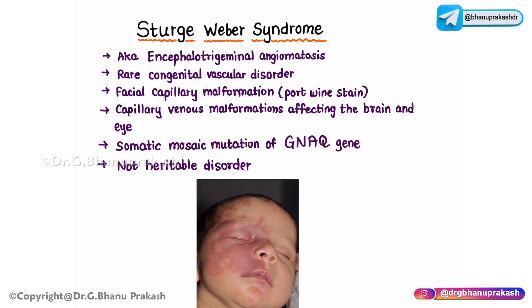Today we are going to discuss one of the very important diseases called Sturge-Weber syndrome. The Sturge-Weber syndrome is also called encephalotrigeminal angiomatosis. Let's break this down in more detail.